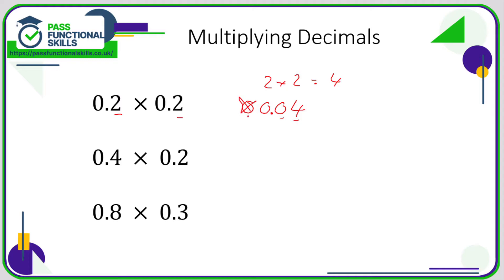0.4 times 0.2. Well, two fours are 8. So if I write 8 with some zeros, now it's easy for me to create my two decimal places. So the answer is 0.08.